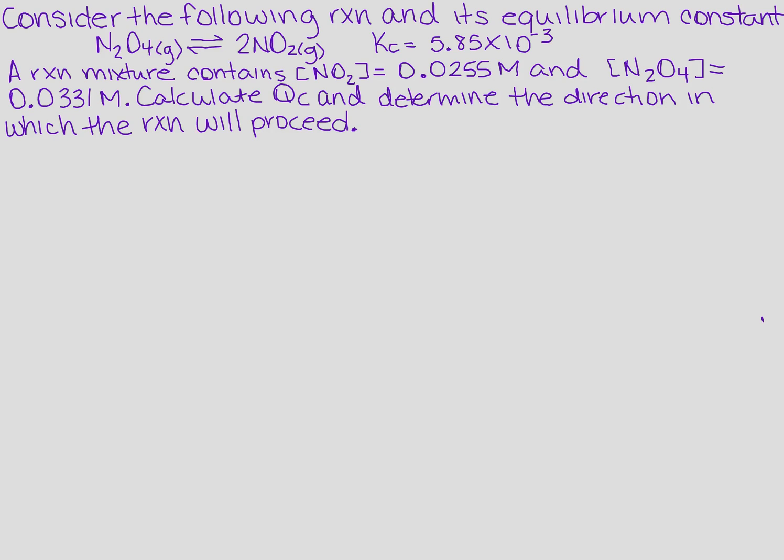We are asked to consider the following reaction and its equilibrium constant. It tells us that in that reaction we have a mixture which contains a concentration of NO2 and a concentration of N2O4, but it wants us to calculate Q sub C and then determine the direction in which the reaction will proceed.